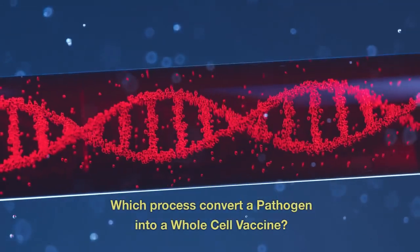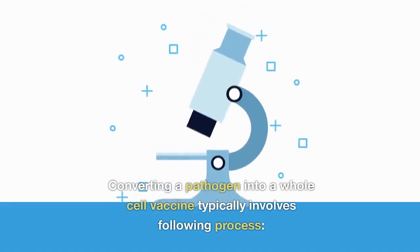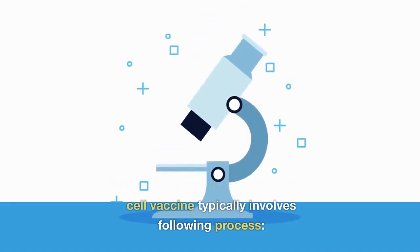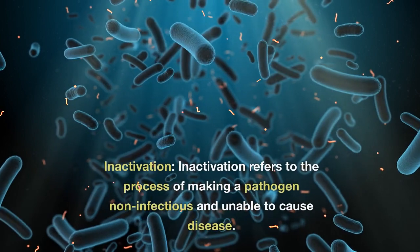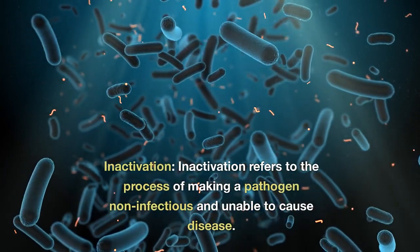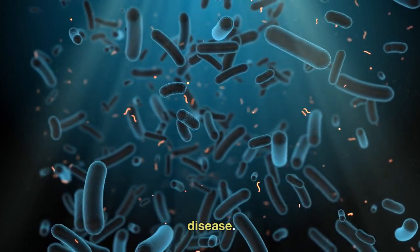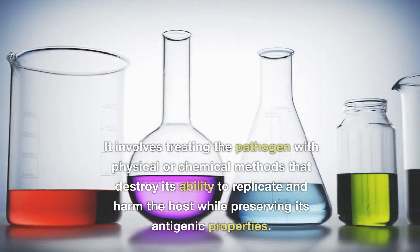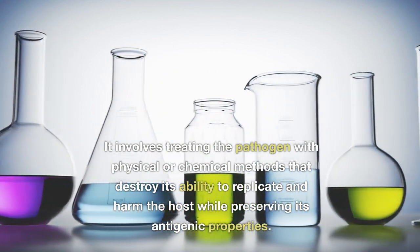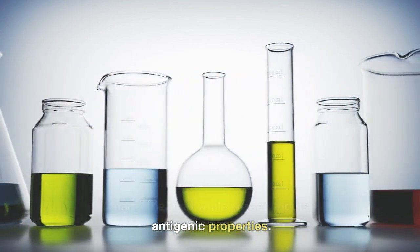Which process converts a pathogen into a whole cell vaccine? Converting a pathogen into a whole cell vaccine typically involves the following process. Inactivation refers to the process of making a pathogen non-infectious and unable to cause disease. It involves treating the pathogen with physical or chemical methods that destroy its ability to replicate and harm the host while preserving its antigenic properties.